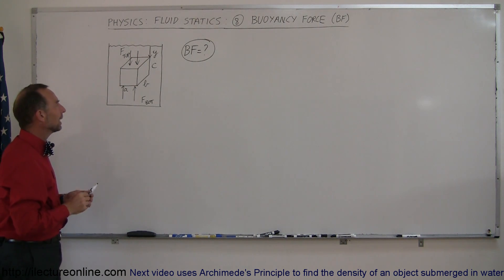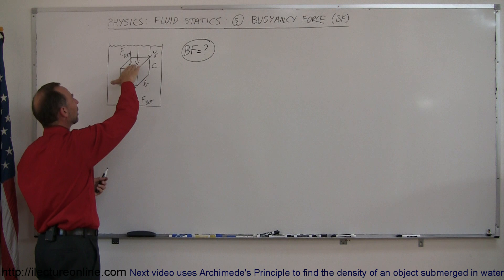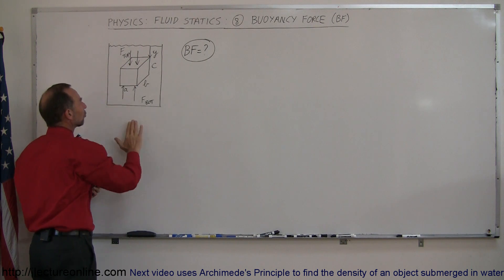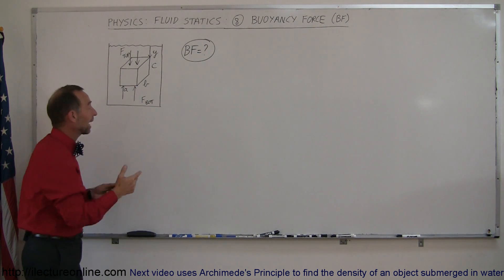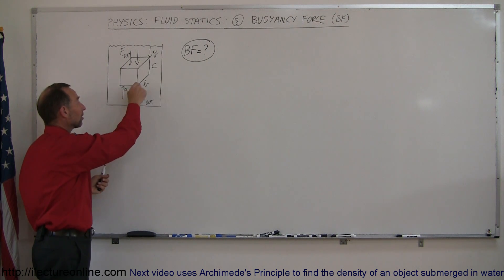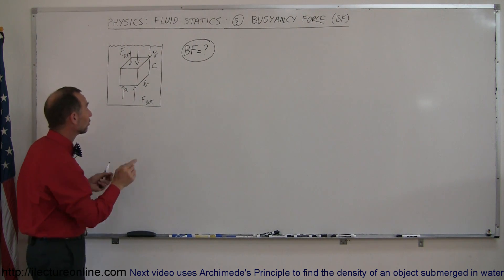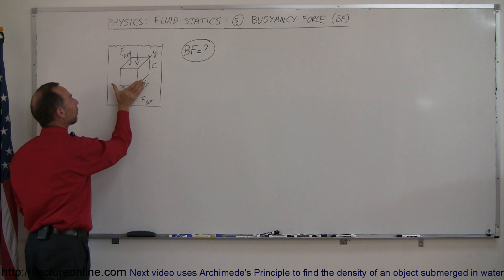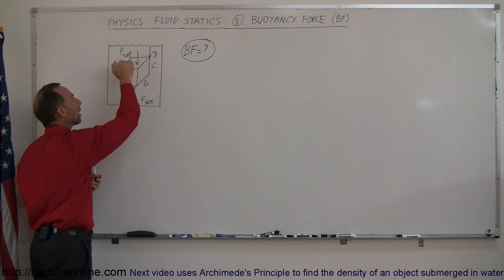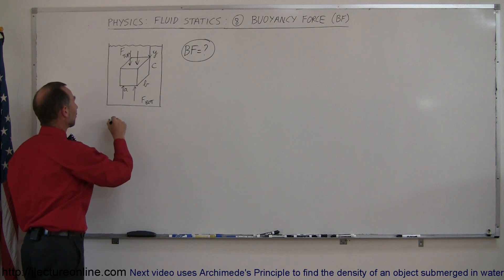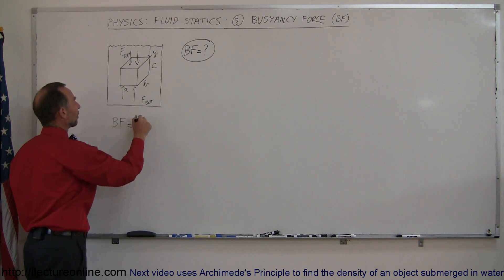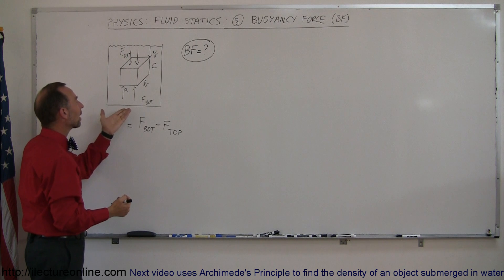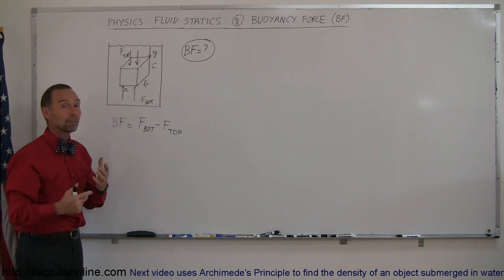The way that's done is by looking at the force at the top of the block, which is caused by the pressure at the top of the block, and then there's a force pushing back up from underneath because there's pressure at that location as well. Since the bottom of the block is deeper into the liquid, the pressure there is greater, and since the force is simply the pressure times the area, the force upward at the bottom will be greater than the force downward at the top. The buoyancy force can simply be calculated by taking the force at the bottom and subtracting the force at the top — it's the difference between those two forces that creates the buoyancy force.